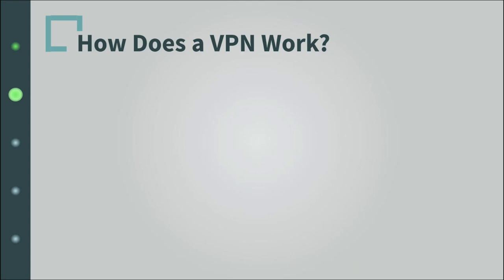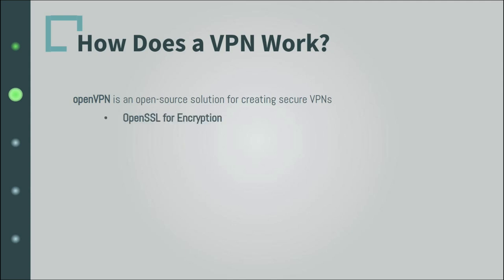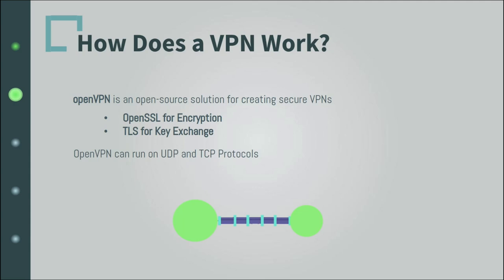Going into further details on how VPNs operate means diving deeper into the inner workings of these protocols. If you want to dig deeper, one of the most common security protocols is OpenVPN — an open source solution for creating highly secure VPNs. It uses OpenSSL encryption and handles key exchange using TLS, setting up a tunnel between endpoints for secure communication. It is typically run over UDP but it can be used over TCP to secure web traffic. OpenVPN is best used to avoid detection and network limitations.